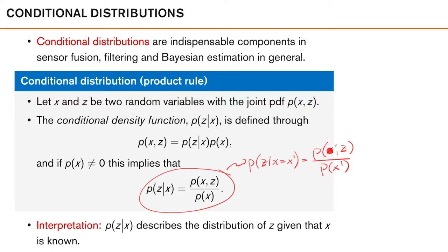So in principle, we take the joint probability density p of x prime and z and then normalize it with the constant p of x prime. As we're typically interested in this as a function of z, in many cases it's beneficial to view this as proportional to the joint density. The conclusion here is that the conditional density of z given x is proportional to the joint density where we have fixed one of the dimensions — x in this case — and view it as a function of z. The interpretation is that p of z given x describes the distribution of z given that x is known, so we don't have any uncertainty about x anymore.